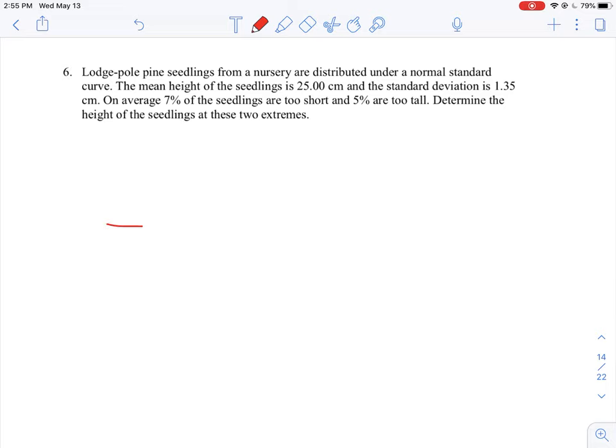So again, I will draw an axis here and then we will put in a normal distribution curve. And we will mark off the middle of the curve and that is going to be the mean height. So that is 25 centimeters. And we know the standard deviation sigma is 1.35.